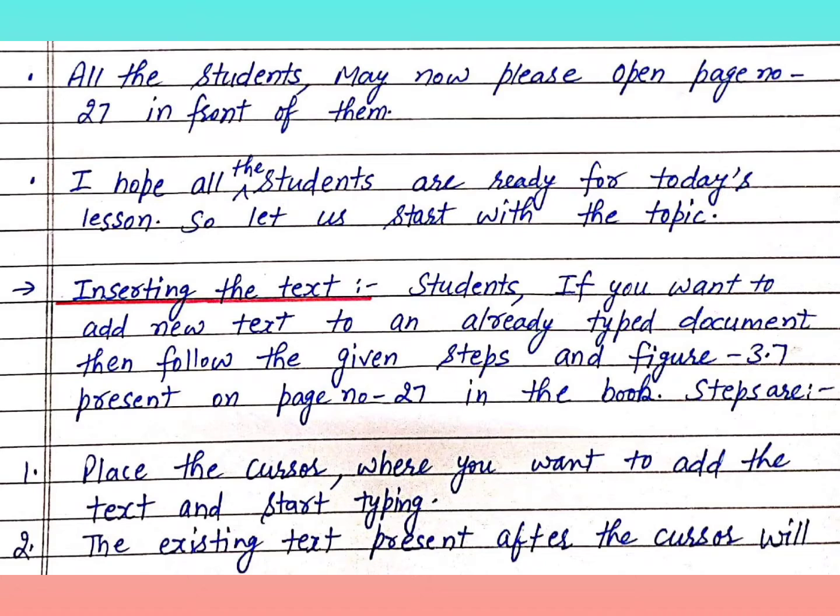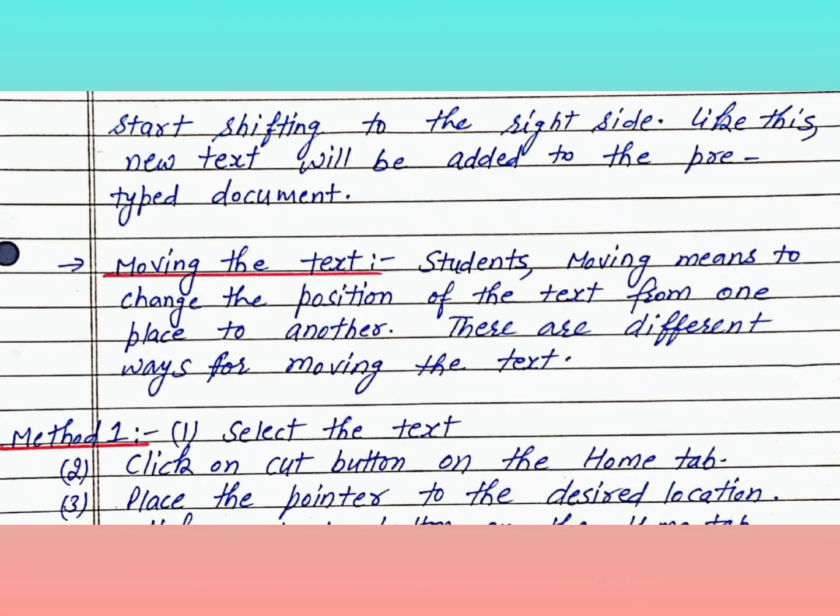Students, if you want to add new text to an already typed document, then follow the given steps. Step 1: Place the cursor where you want to add the text and start typing. Point 2: The existing text present after the cursor will start shifting to the right side. Like this, new text will be added to the pre-typed document.